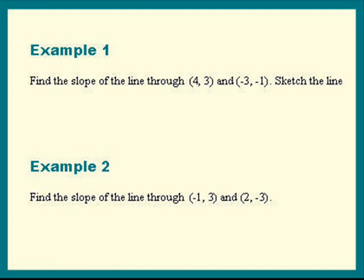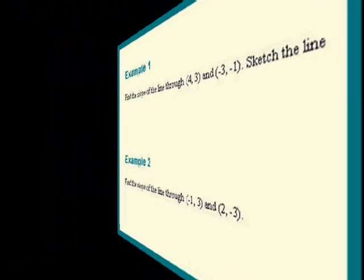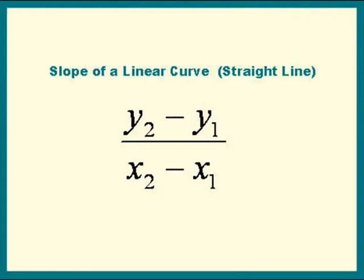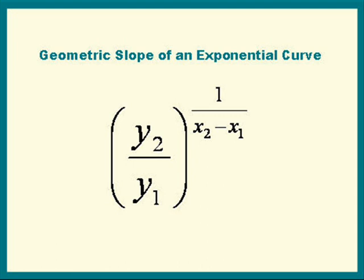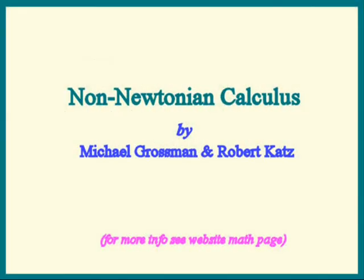Before I end this lesson, I just want to mention one more thing. There are other kinds of slopes. Instead of using differences for the y's or differences for the x's, we can take ratios, for example. That leads to many systems of calculus. Jane's husband co-created these, and scientists are beginning to discover many uses for them. So someday, maybe you'll end up taking a course in non-Newtonian calculus.